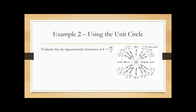Example two: evaluating the six trig functions at T = 2π/3. When it says T, we're assuming radians. So that's 2π/3 radians. I look for where that is on the unit circle — that's at 120 degrees. Knowing that, we want the ordered pair and then use it to figure out our six trig functions.